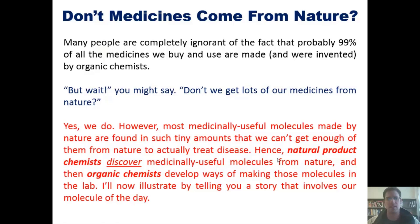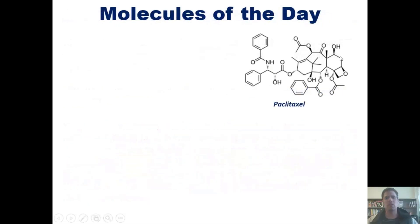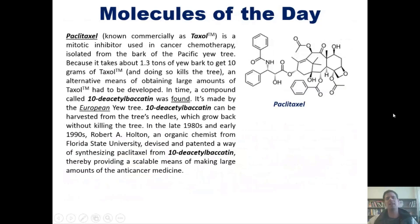Hence, natural product chemists discover medicinally useful molecules from nature, and then organic chemists develop ways of making those exact same molecules in the lab on large scale, and hopefully in an affordable and efficient way. I'll now illustrate this by telling you a story that involves our molecule of the day. This molecule is called paclitaxel. Paclitaxel, known commercially as Taxol™ as well as some other names, is a mitotic inhibitor used in cancer chemotherapy, isolated from the bark of the Pacific yew tree.